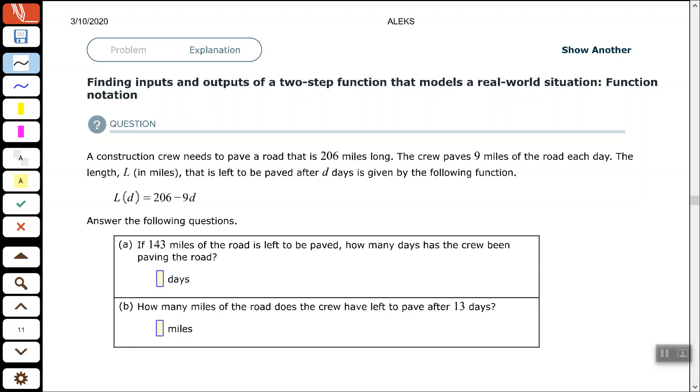Alright, so we have a construction crew that needs to pave a road that is 206 miles long. The crew paves nine miles of the road each day. The length L in miles that is left to be paved after D days is given by the following function.